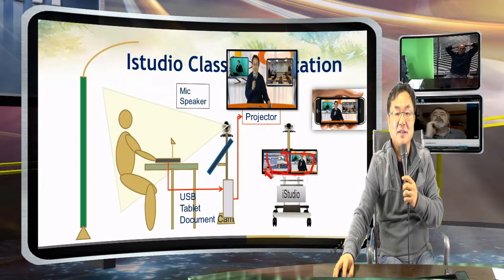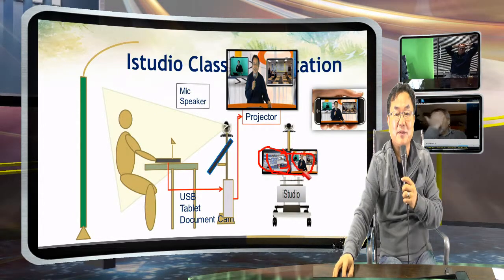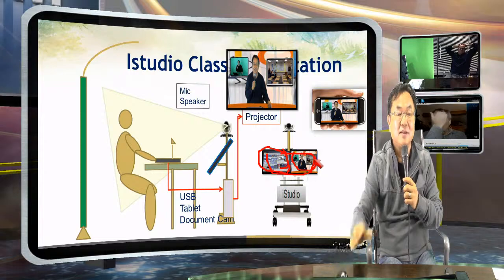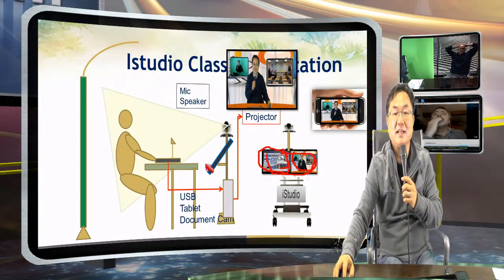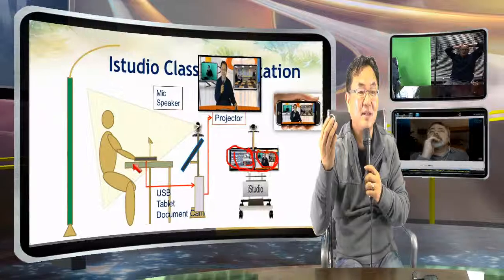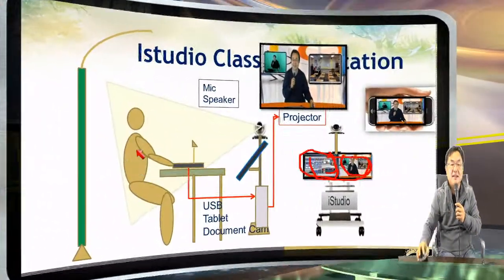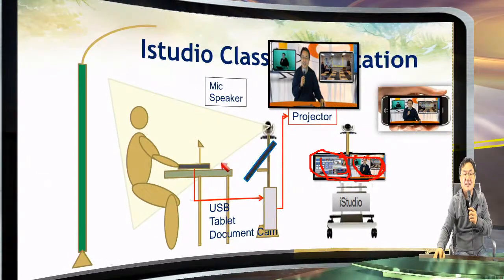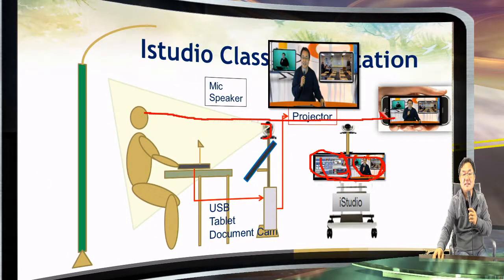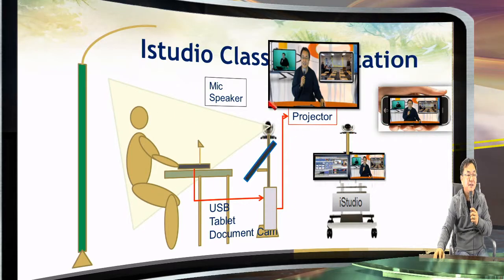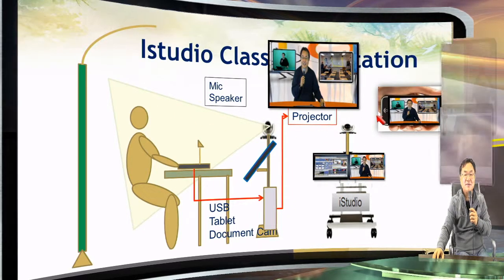One monitor shows the other classroom, one monitor shows the presentation he's doing right now. He just uses a mouse — like I'm doing — to make things bigger or smaller, controlling everything from here. This one also has a small camera so the teacher can still see students in front, and he just makes a normal presentation in the classroom.